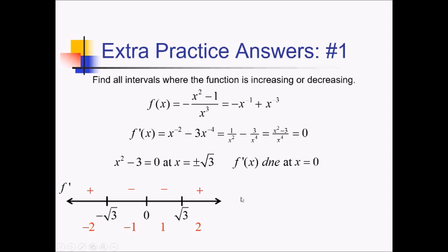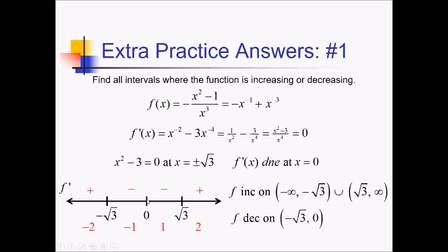Taking a look at what my signs are doing, it appears I am increasing on the interval from negative infinity to negative radical 3, because that's where f prime is positive, and also increasing on the interval from radical 3 to positive infinity. For decreasing, that's going to be negative radical 3 to 0, union 0 to positive radical 3. You can't include 0 in this interval because 0 is undefined in the original function — it's parentheses or nothing there.